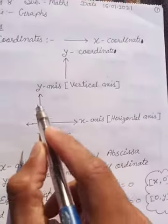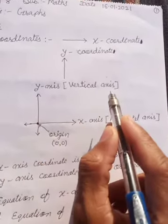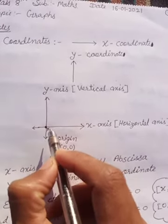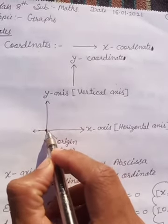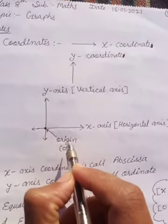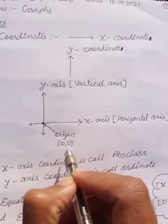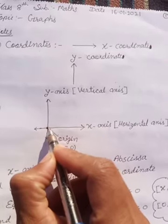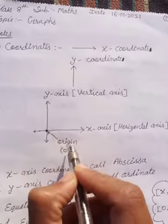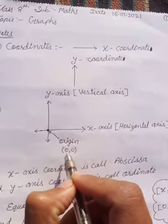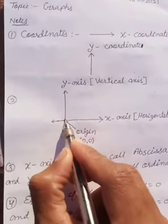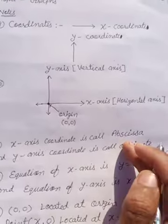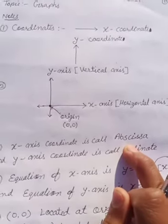The x-axis is called horizontal axis and y-axis is called vertical axis. Where both axes — x-axis and y-axis — meet each other, that point is called the origin. The coordinates of the origin are (0,0).